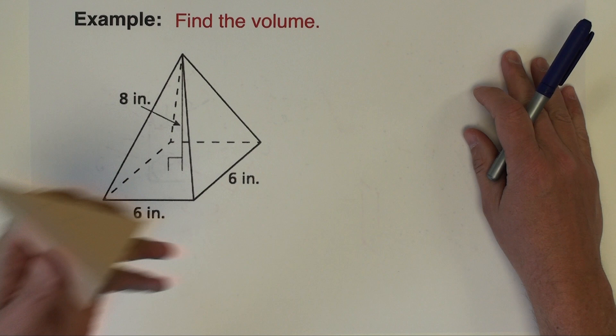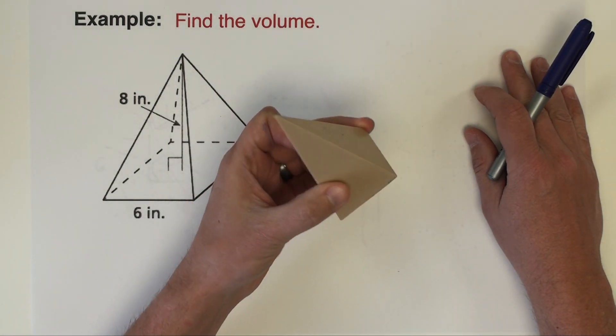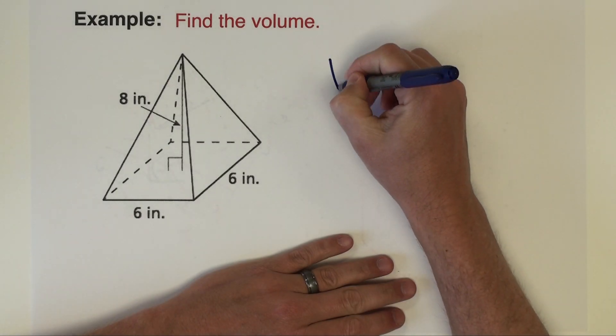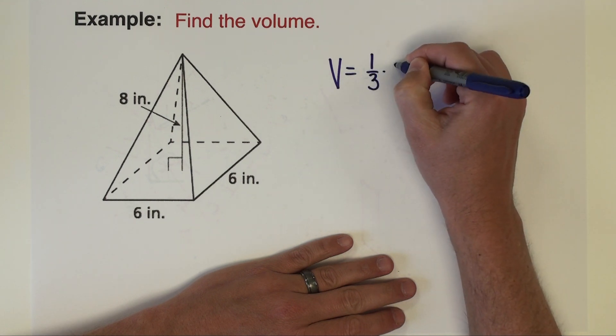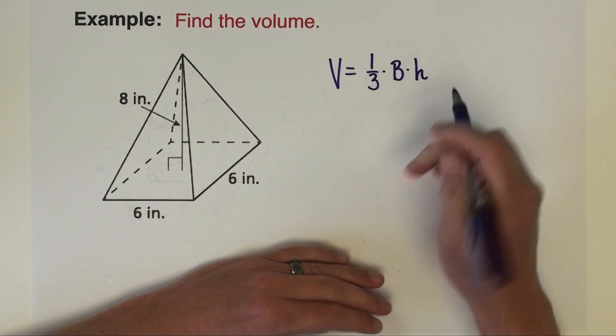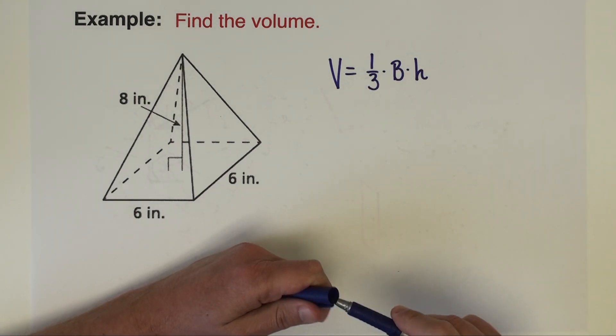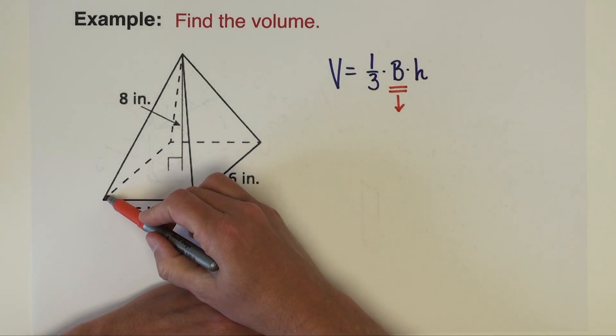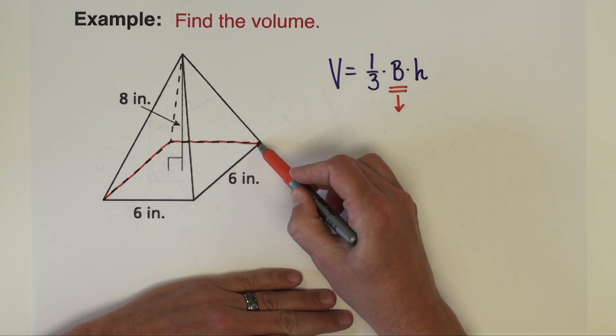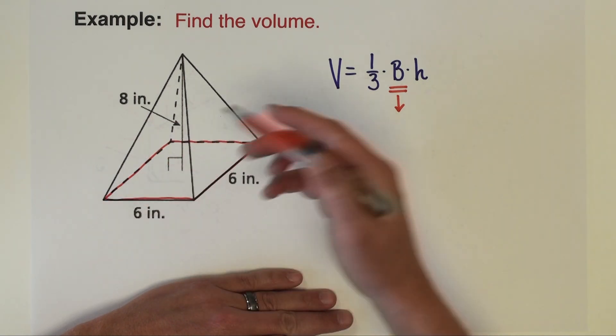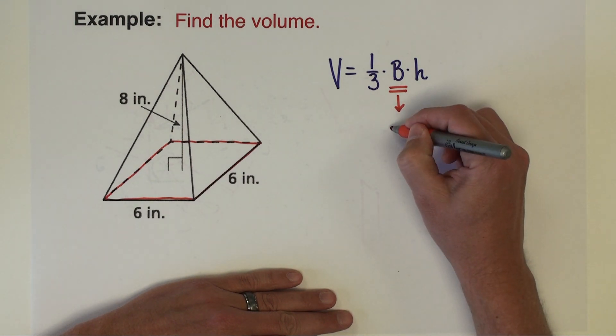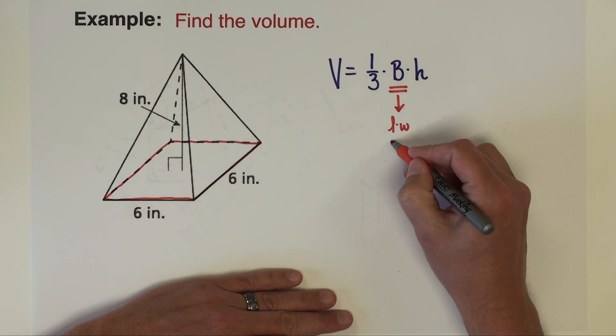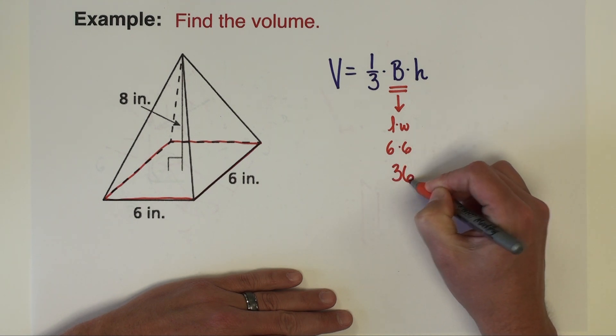Okay, for the first example let's take a look at this square-based pyramid and look at how we find the volume. It's a very common three-dimensional solid shape. Volume formula is one-third times the area of the base times the height. Let's start with the area of the base. The base in this pyramid is shaped like a square, and we find the area of a square by doing length times width. For this particular square that's going to be 6 times 6 or 36.